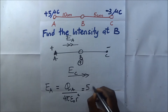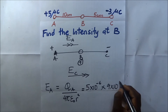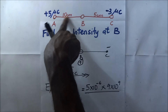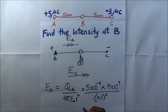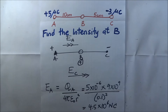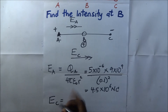The intensity due to A is: E_A equals Q_A times nine times ten to the power nine, divided by r squared. Q_A is five times ten to the negative six. The distance is 10 centimetres, which converts to 0.1 metres, so r squared is 0.1 squared. Our answer for intensity due to A is 4.5 times ten to the power six newtons per coulomb.